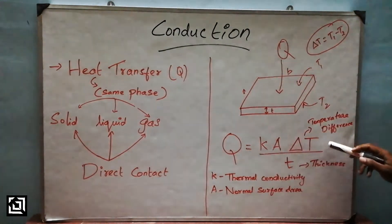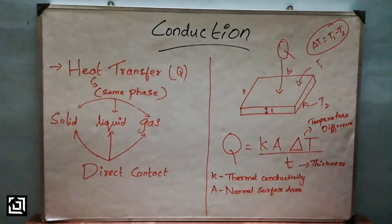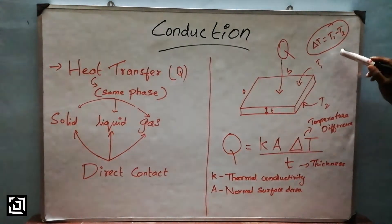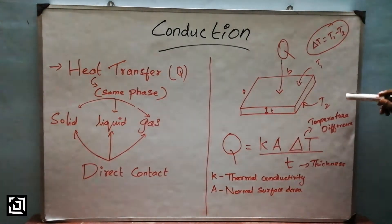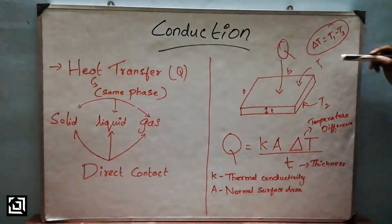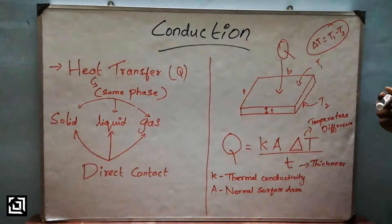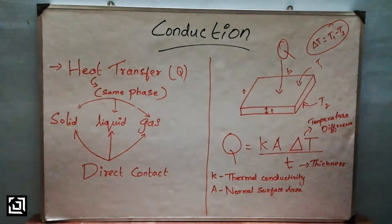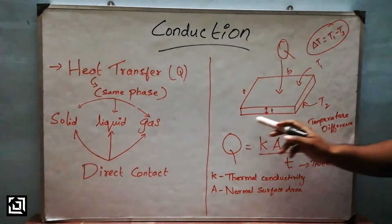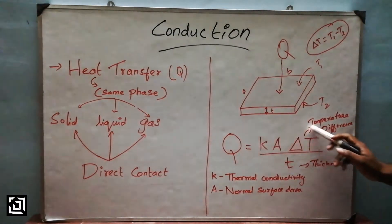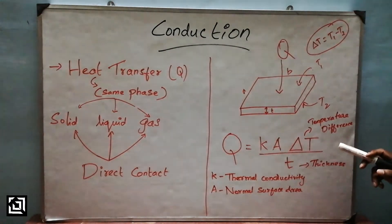The third factor is temperature difference ΔT — the difference between high temperature and low temperature. In case 1, T1 is 200 and T2 is 100, so ΔT is 100. In case 2, T1 is 1000 and T2 is 200, so the difference is 800. In case 2, the temperature difference is greater, so heat transfer is higher.